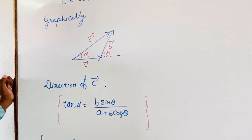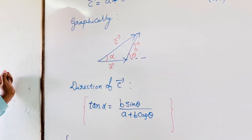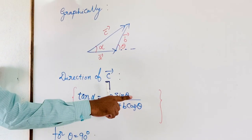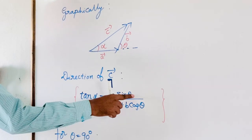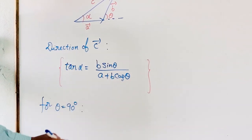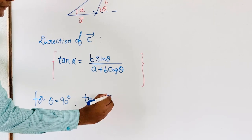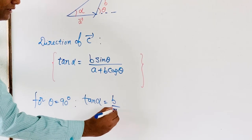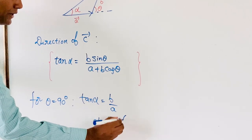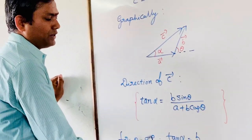Now here, suppose if I am taking these two vectors as perpendicular, theta will become 90. You can substitute theta value 90 here: sin 90 will become 1, cos 90 will become 0. After the substitution, what we will get is tan alpha is equal to B by A. So alpha will become tan inverse of B by A, by using the rule of inverse trigonometric functions.